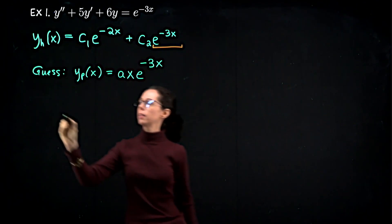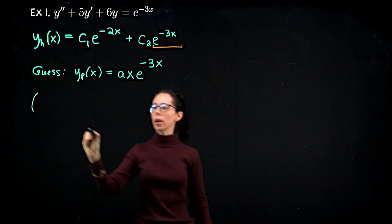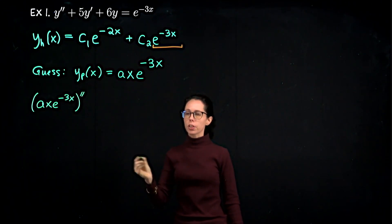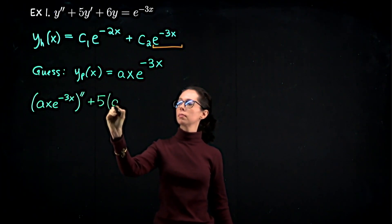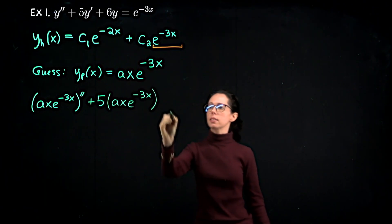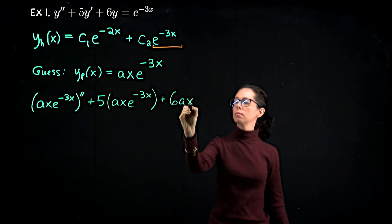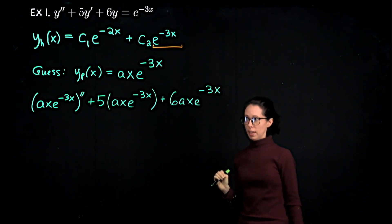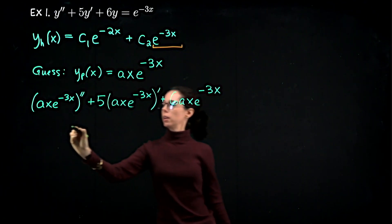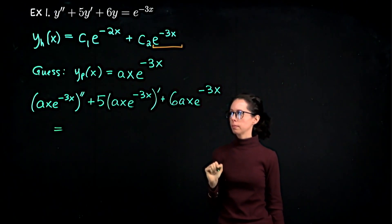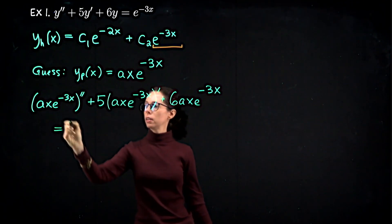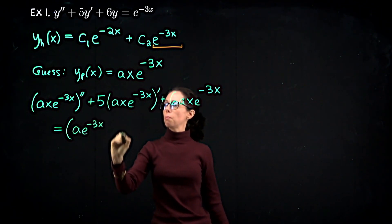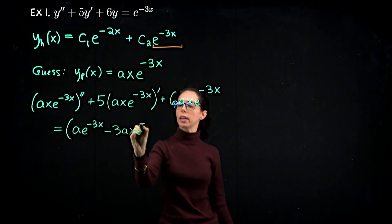So let's plug it into the left-hand side and simplify. We have (Ax·e^(−3x))'' plus five times the first derivative plus six times the function itself. That is the left-hand side of our equation. It's going to get pretty large because we have to use the product rule. Taking one copy of the derivative using the product rule, that's going to be A·e^(−3x) minus 3Ax·e^(−3x).